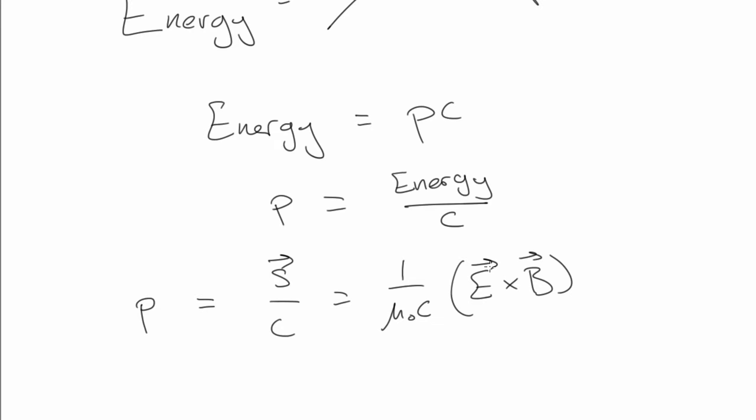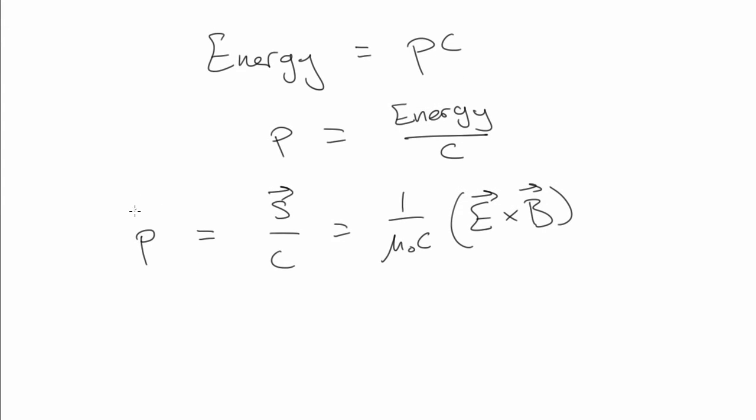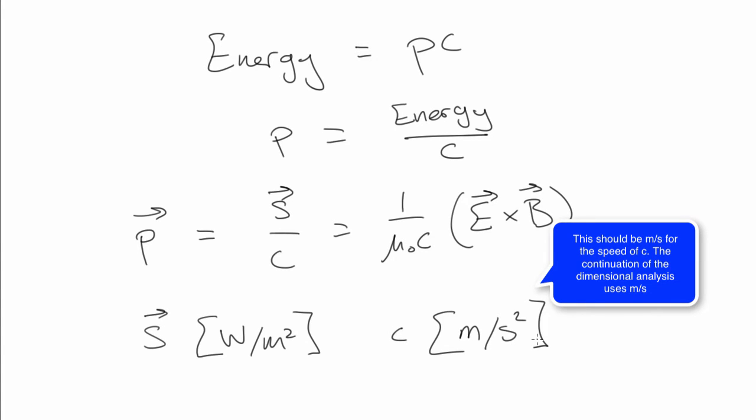So before we go any further, let's look at the units of the momentum flux equation here. The Poynting vector has units of watts per meter squared, and c has units of meters per second.